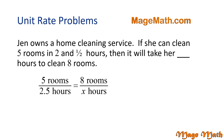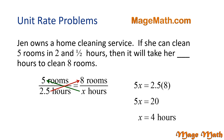In this problem, we have five rooms over 2.5 hours is equal to eight rooms over x hours. We will use the process of cross products to solve for x by multiplying through the diagonals to write an equation. 5x equals 2.5 times 8. Multiply on the right: 5x equals 20. Divide by 5 on both sides: x equals 4. This means Jen can clean eight rooms in four hours. Great job!